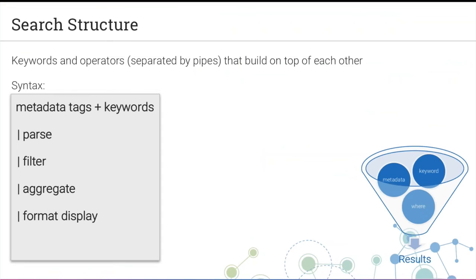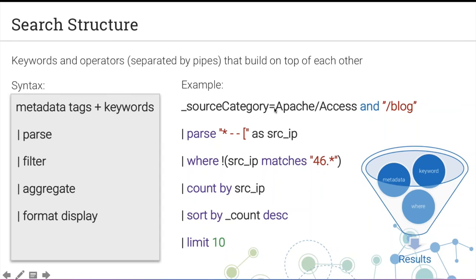The structure of a search: you search with a metadata tag — tags added to every single message coming into the system — then specify keywords, then parse out data to extract meaningful fields, and then do something with that data. For example: a search against data tagged with 'source category equals Apache access,' a keyword of 'blog' to target messages hitting my blog page, then parsing the source IP, excluding IPs starting with 46, counting by source IP, sorting, and limiting to the top 10 users.